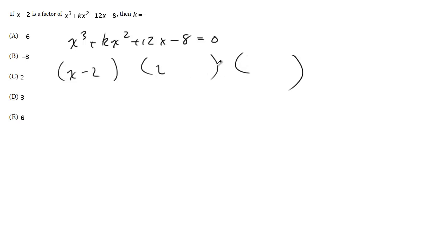The point is each of these factors can then be set equal to zero, which means x equals 2 is a root of this function, of this equation. Because it comes from this factor, x minus 2 equals zero. This is a factor, so x equals 2.